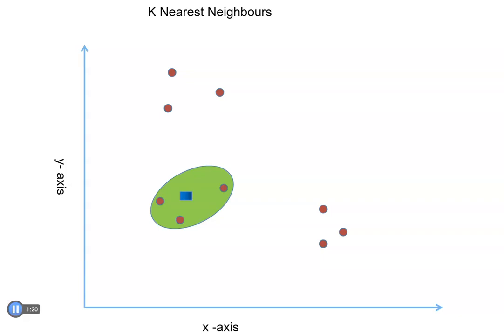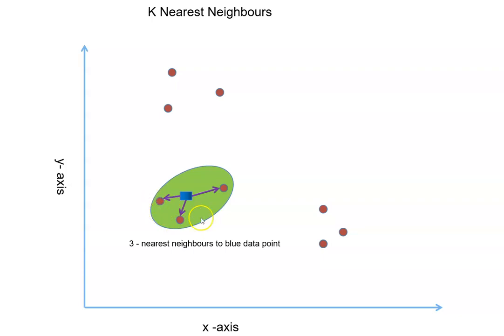Step two: we want to find the value of that missing data point. Once we have identified the three data points nearest to the blue data point, we look at the values of that particular variable in those three data points and take an average of the three.